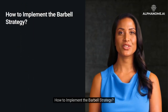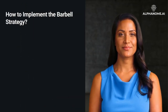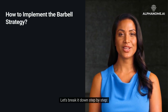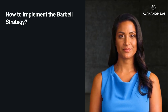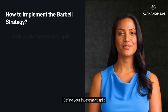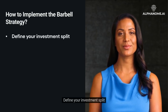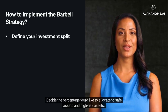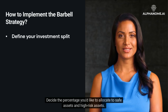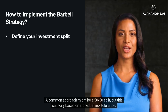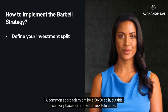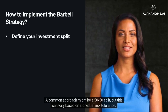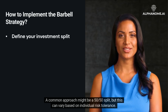How to implement the barbell strategy? Let's break it down step by step. First, define your investment split: decide the percentage you'd like to allocate to safe assets and high-risk assets. A common approach might be a 50-50 split, but this can vary based on individual risk tolerance.